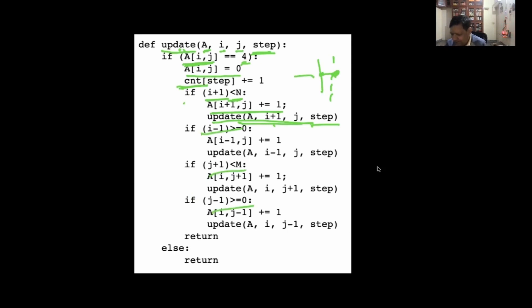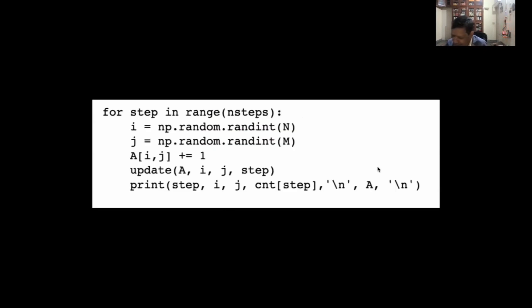Finally it will give you a count. This count is incremented for each step. Count is a global variable, and I do it for a number of steps, n steps.